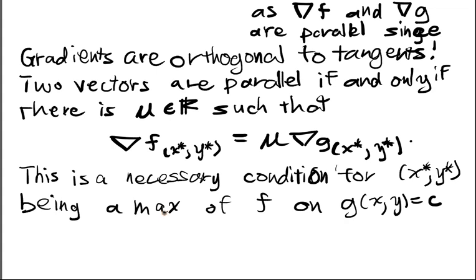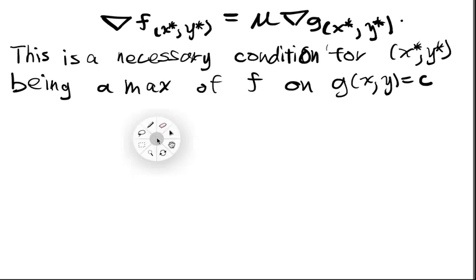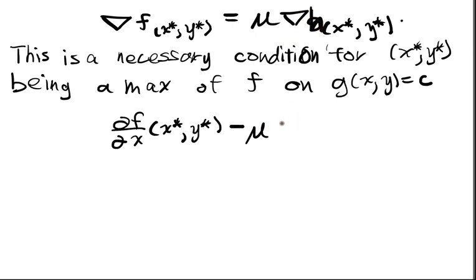This is great. So now that means that essentially we have three equations and three unknowns. So I'm going to write down exactly what those equations are. So this is actually a vector - these are 2D vectors. And so the first entry of this guy is df/dx at x star, y star minus μ, and this should be an h - our constraint function is h - dh/dx at x star, y star is equal to 0.